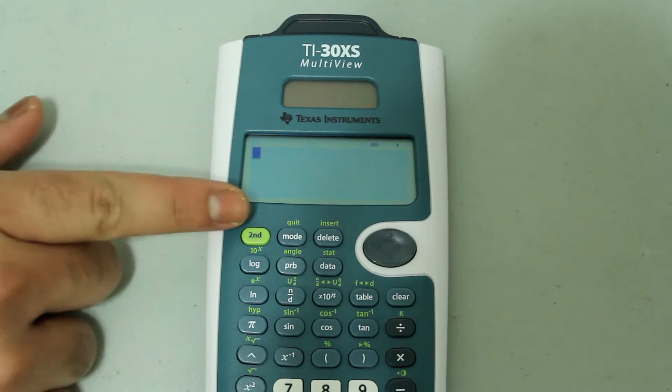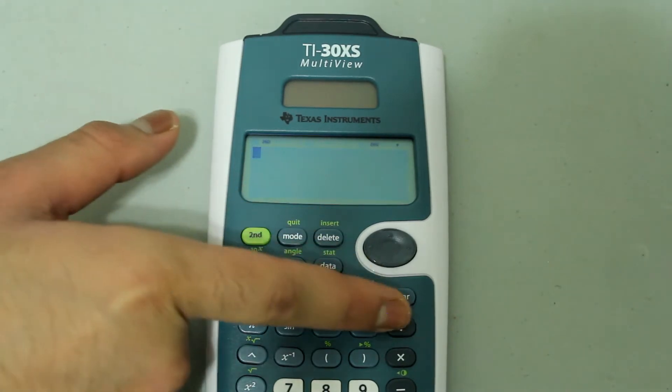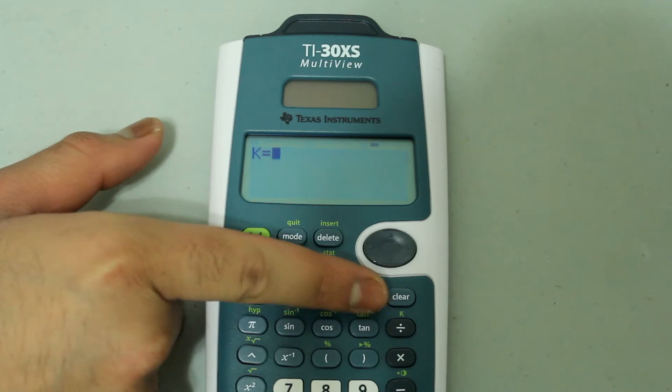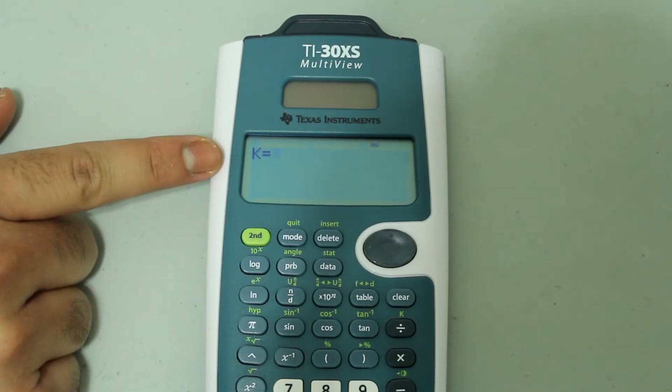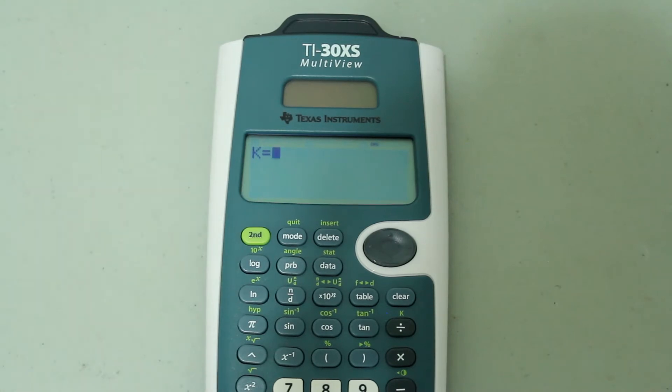Press the second button and then the division button to choose the K option and then you'll notice that K equals comes up on the screen. This is where you type in the operation. Now you might be inclined to replace wherever the entry would be with an X or a variable, but that's not how to do it. You just leave the space blank.